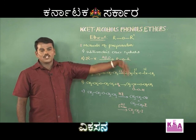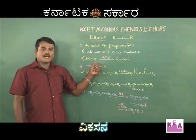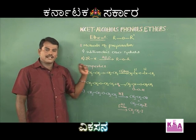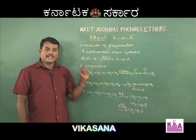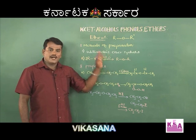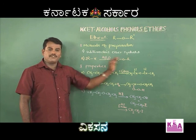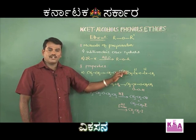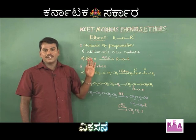For aromatic ethers like anisole or methyl phenyl ether, reaction with HI gives phenol and alkyl iodide.